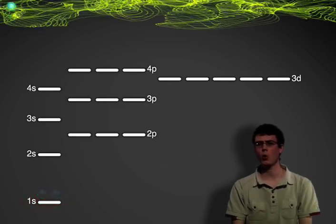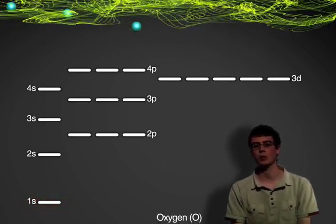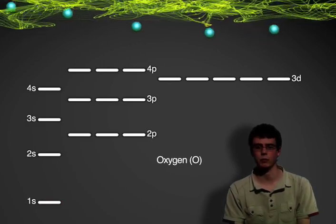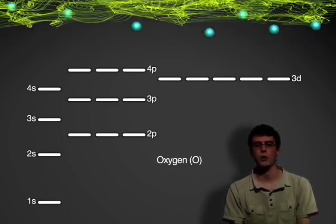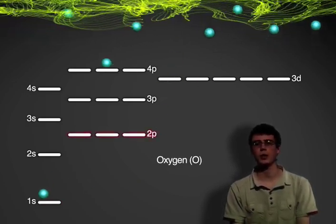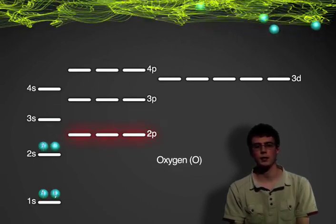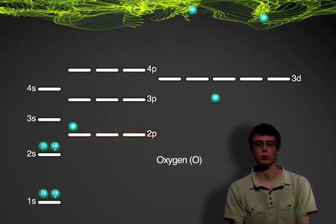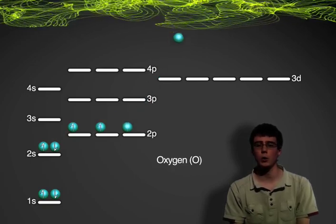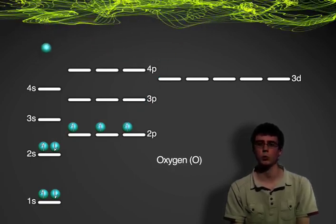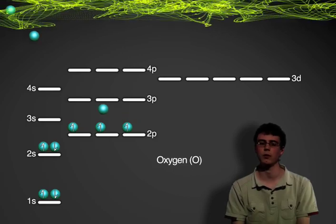But what happens if we were to take an element like oxygen which has eight electrons? Well, we know that there are not enough electrons to completely fill the 2p orbital, and as such the electrons fill the orbital one by one and only pair up when there are no other orbitals with the same energy level available.